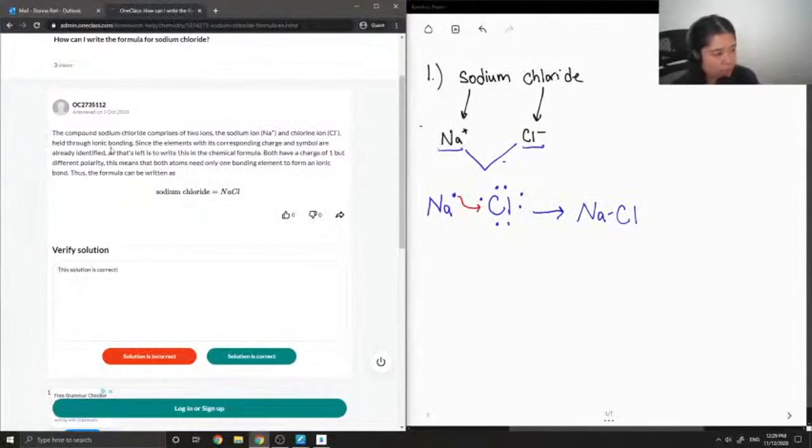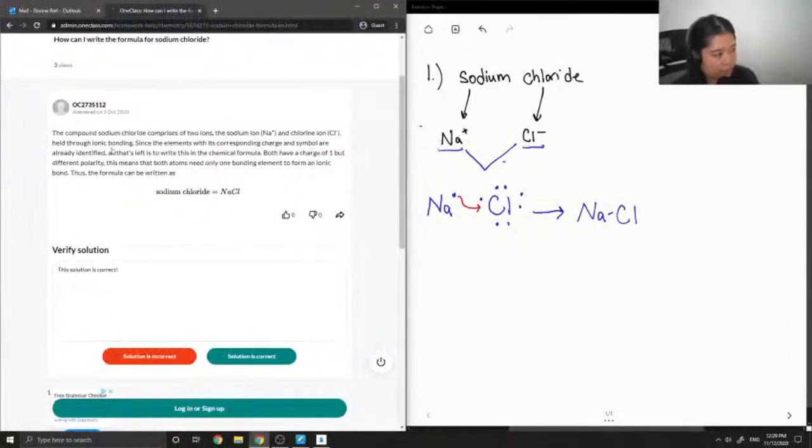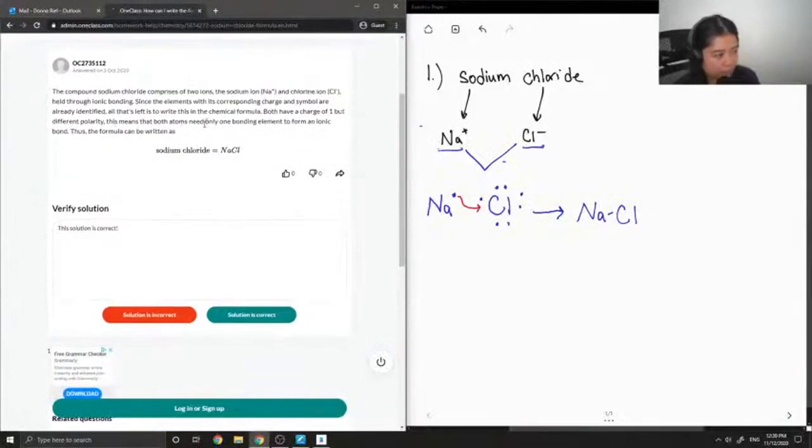Both have a charge of one but different polarity, so this means that both atoms need only one bonding element to form an ionic bond. Thus the formula can be written as NaCl. This solution is correct.